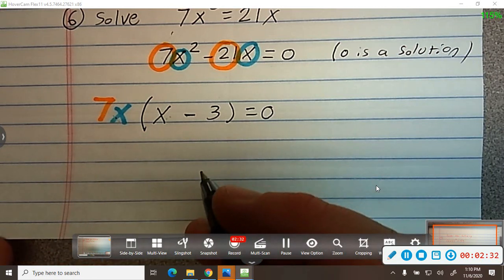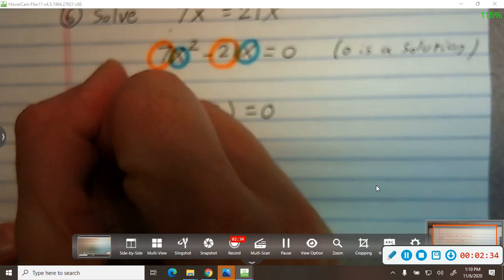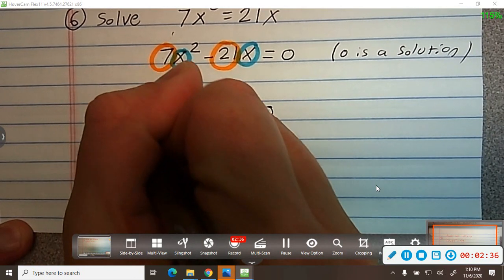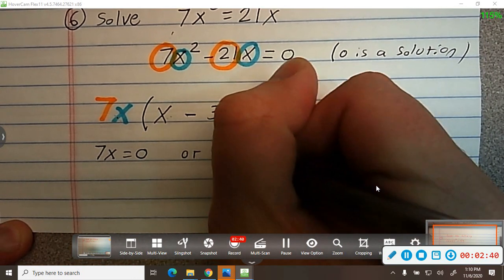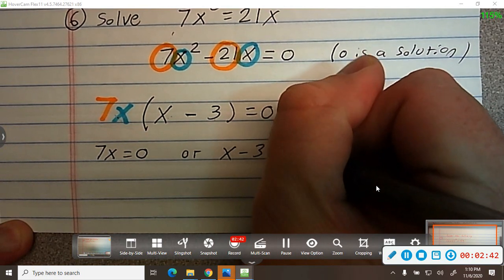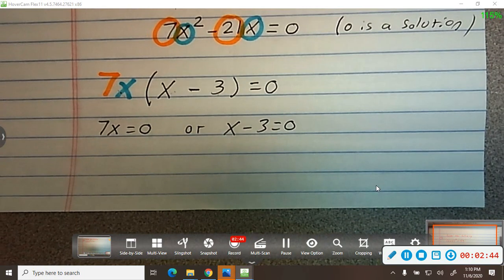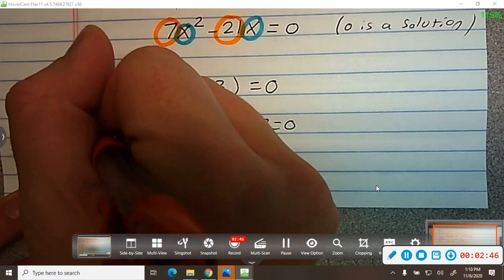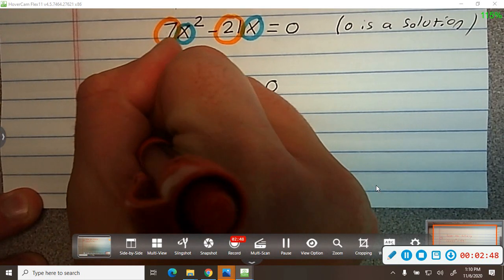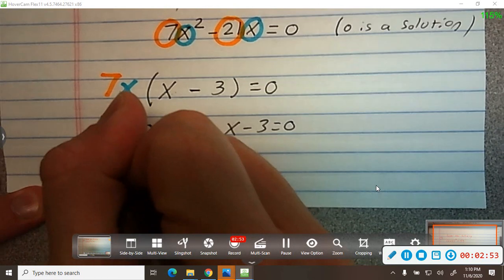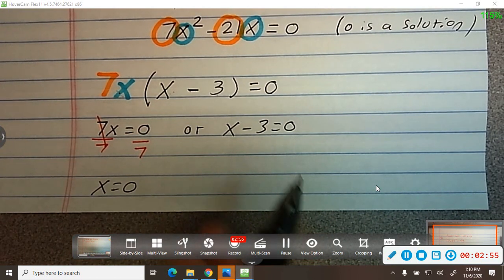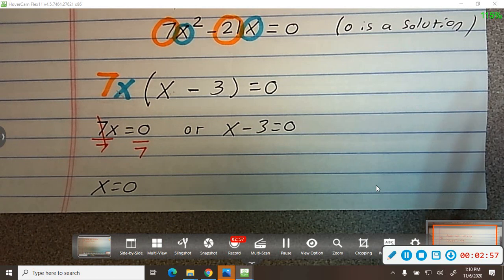So our first one, using the zero product property, would be 7x equals 0. Or x minus 3 is 0. Solving both, if I divide both sides by 7, I still get 0. That's what I said. I said from the beginning 0 is a solution.